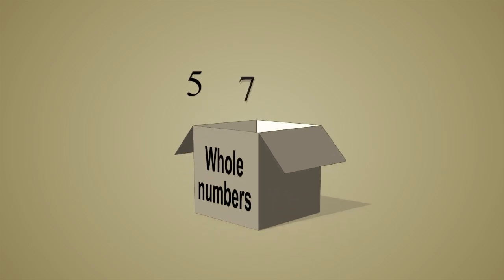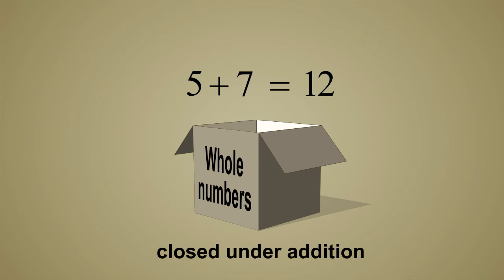When any two whole numbers are added, we always get another whole number. Therefore, we say the whole numbers are closed under the operation of addition. A group being closed under some operation means that the operation will always create a result which is also a member of that same group.